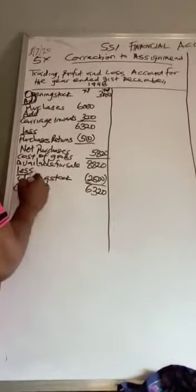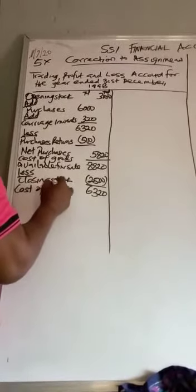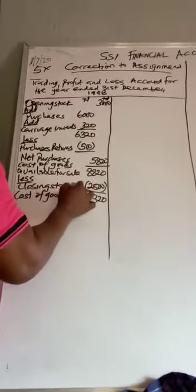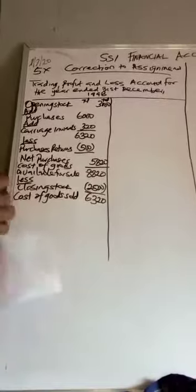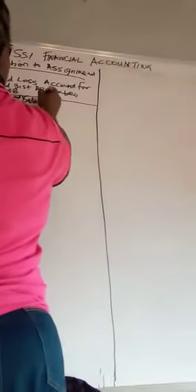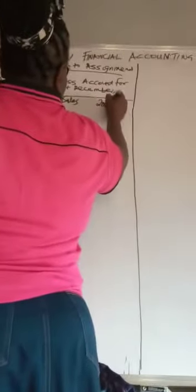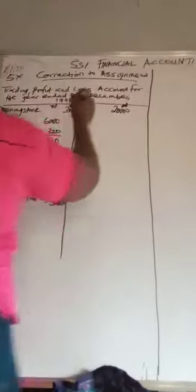This 6,320 is called cost of goods sold. Don't forget we want to determine gross profit. So at this point, we have to know what the sales is. Our total sales was 20,000. But there were sales returns.